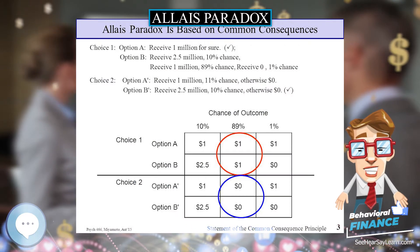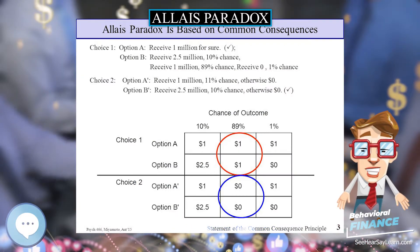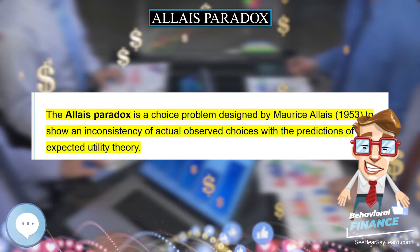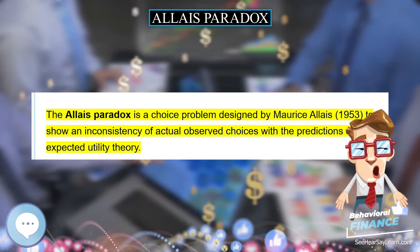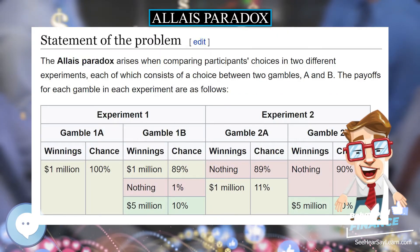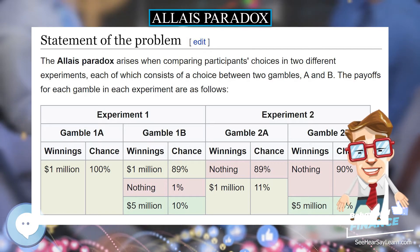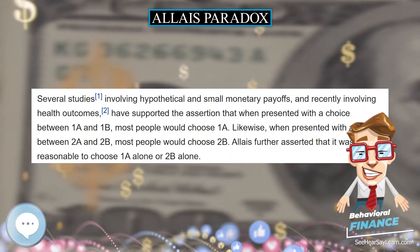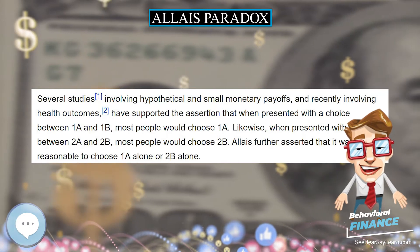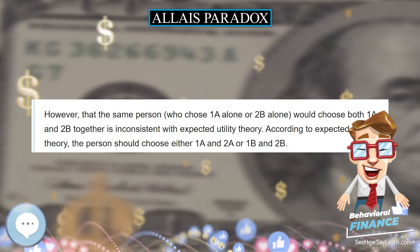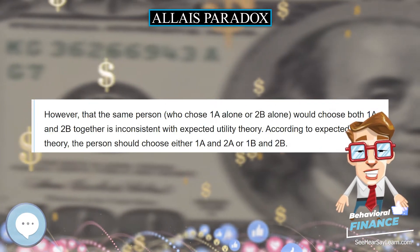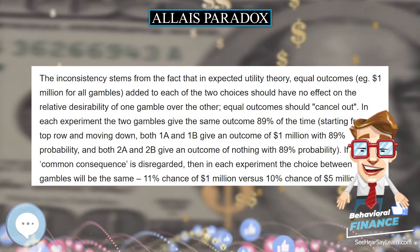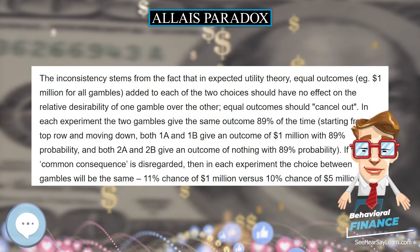After rewriting the payoffs and disregarding the 89% chance of winning, equalizing the outcome, 1B is left offering a 1% chance of winning nothing and a 10% chance of winning $5 million, while 2B is also left offering a 1% chance of winning nothing and a 10% chance of winning $5 million. Hence, choice 1B and 2B can be seen as the same choice. In the same manner, 1A and 2A can also be seen as the same choice.